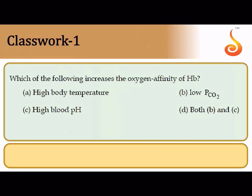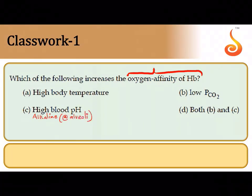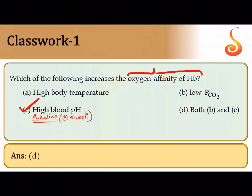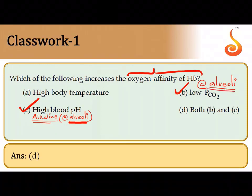Moving to Breathing and Exchange of Gases: which factor increases oxygen affinity of hemoglobin? The most important factor is high blood pH — alkaline conditions, as seen in the alveoli. In tissues, blood pH drops due to increased H+ from CO2. High blood pH helps hemoglobin and oxygen bind strongly. Both high blood pH and low partial pressure of CO2 increase oxygen affinity, so both options B and C apply — both conditions are found in the alveoli.